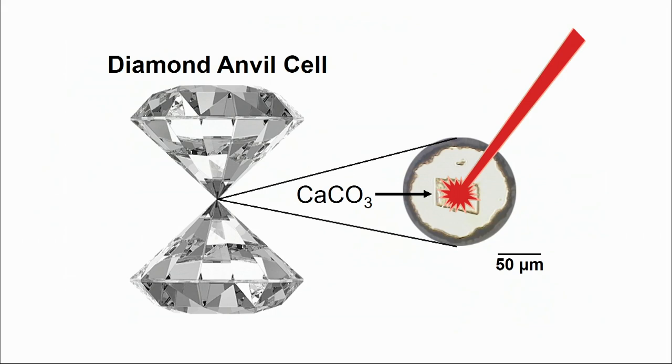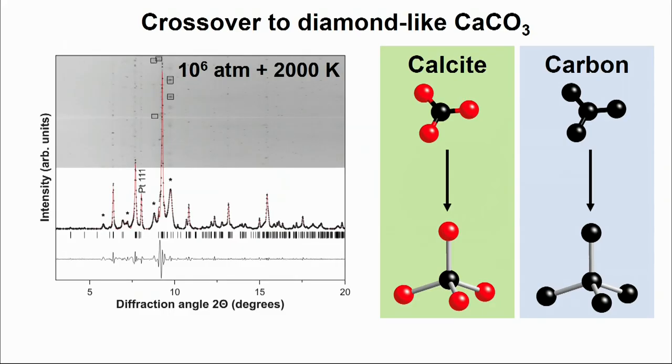At a pressure of about 1 million atmospheres and a temperature of about 2,000 Kelvin, we observed a very interesting transformation. Using X-ray diffraction, we were able to fingerprint the crystal structure of this new high-pressure phase against the possible crystal structures that we expected at this pressure and temperature range.